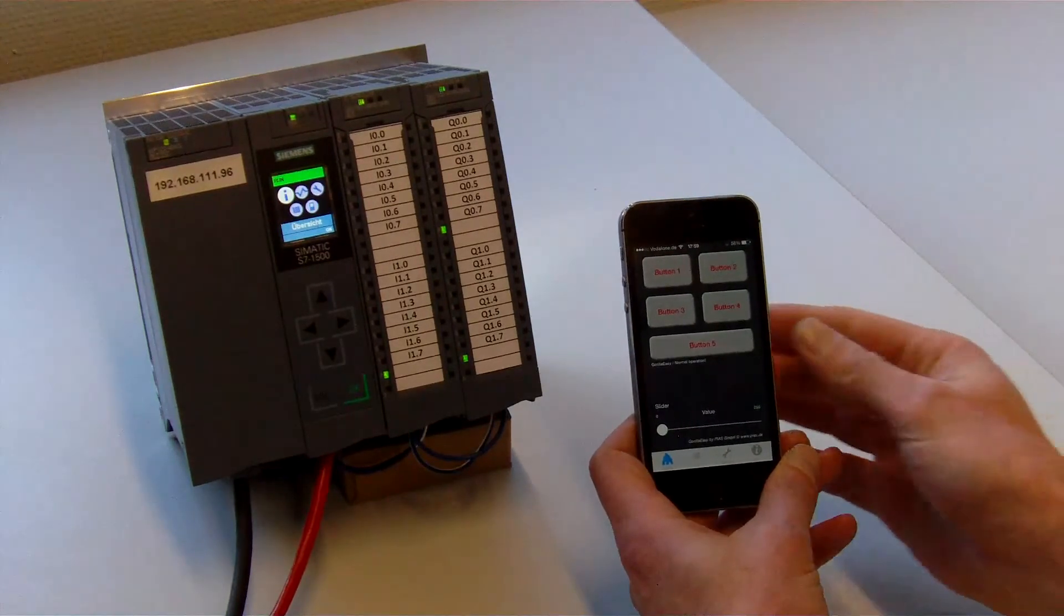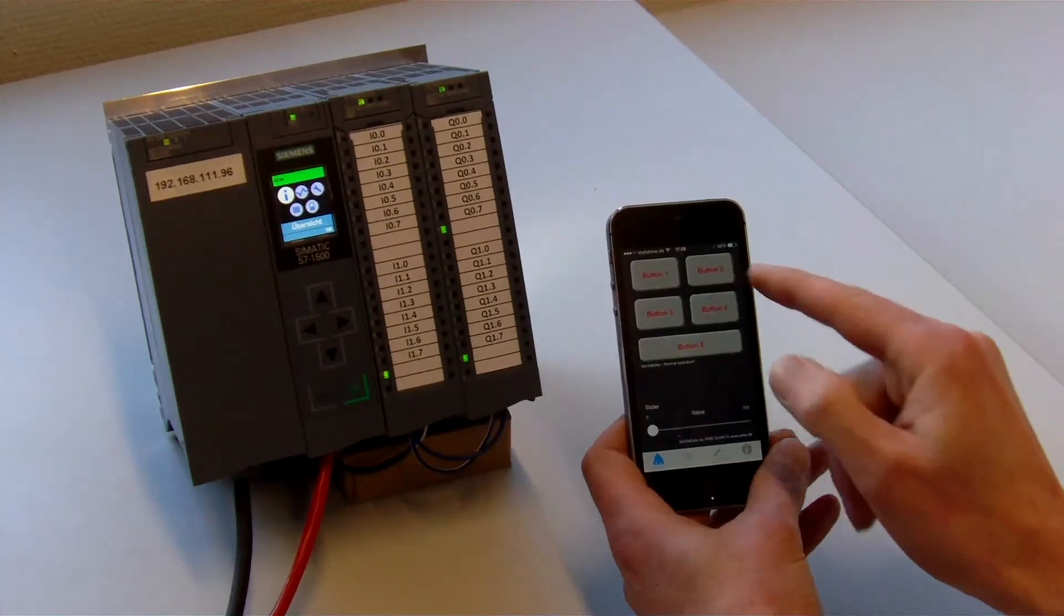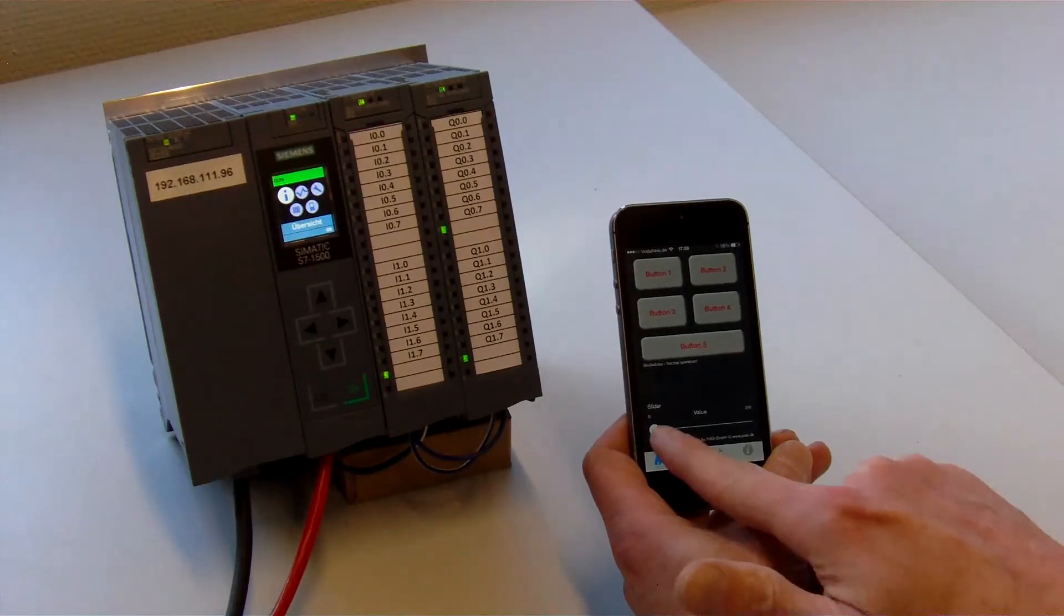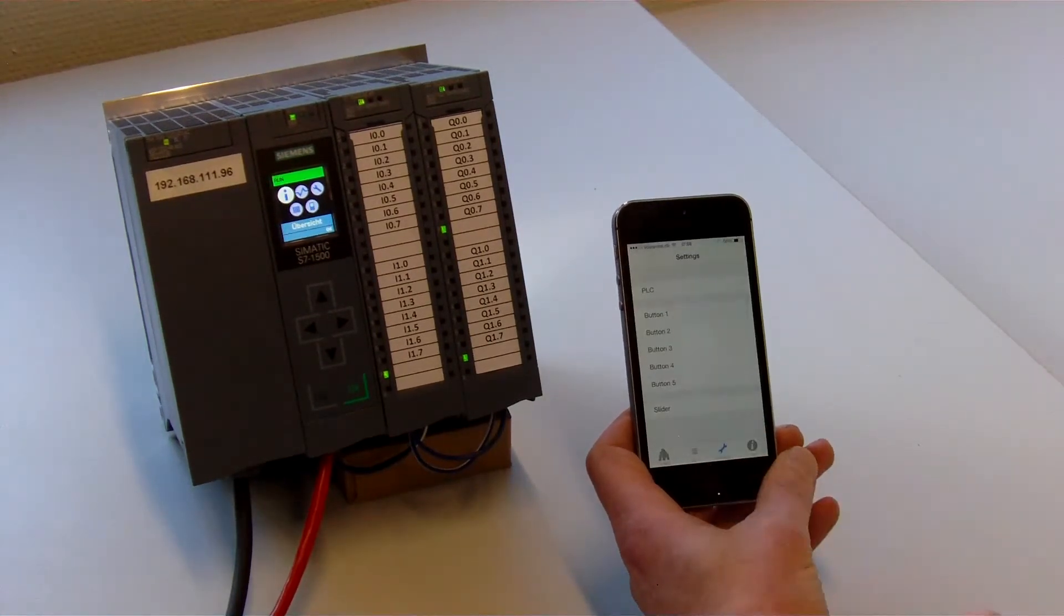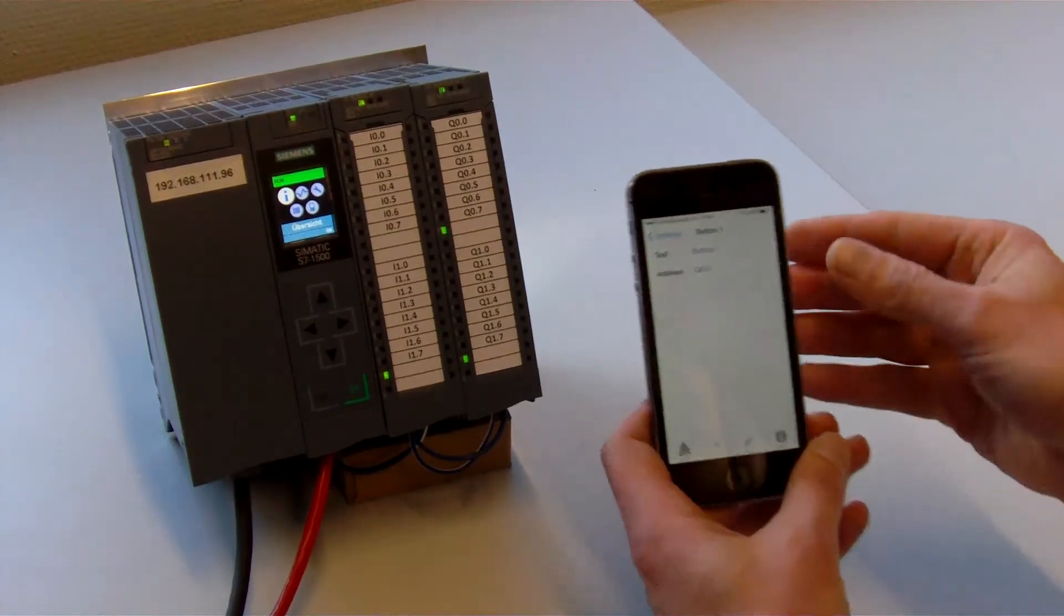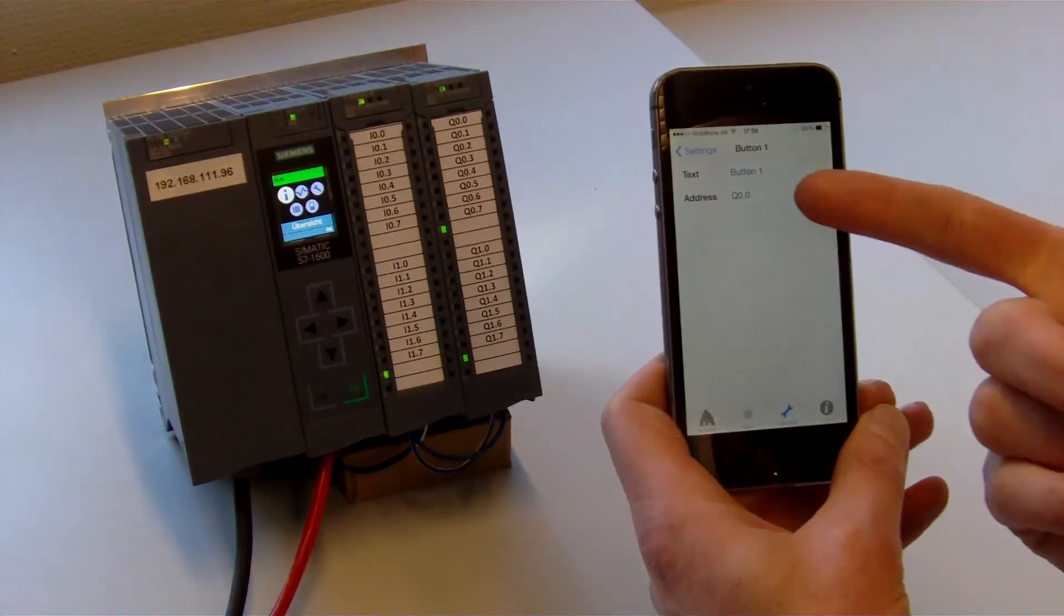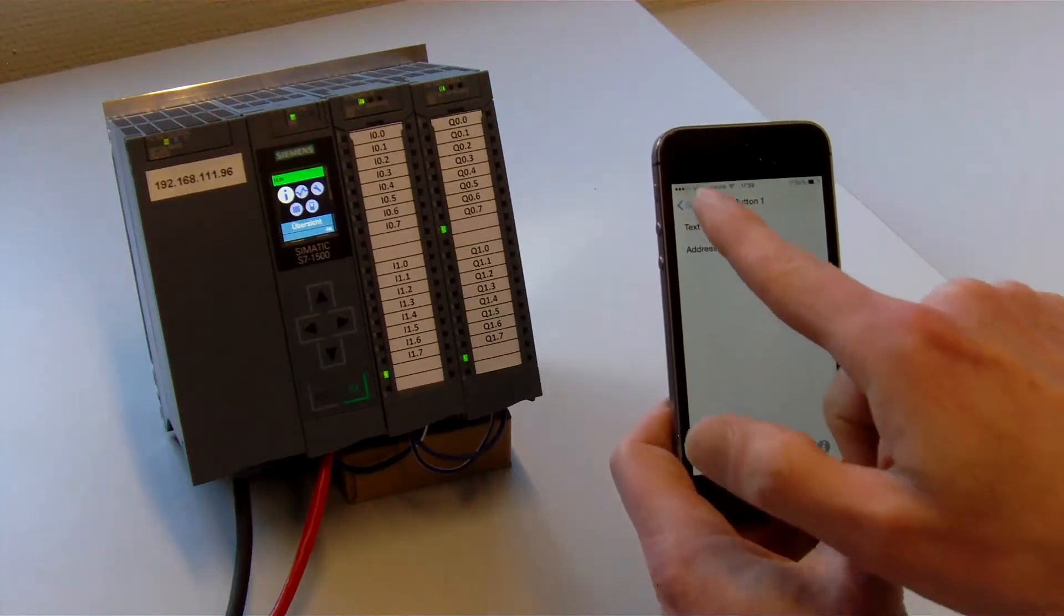So, now you see here button 1, 2, 3, 4, 5 and so on. And the slider value in the settings section you can configure this value. And here you see button 1 is configured to Q0.0.